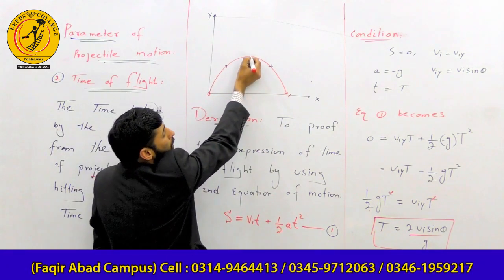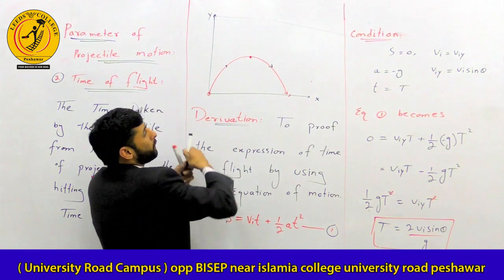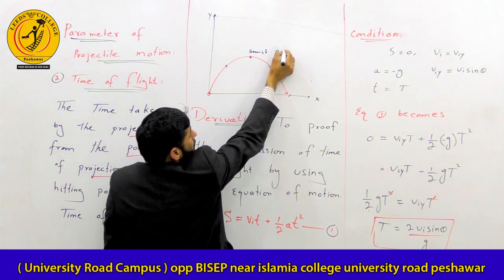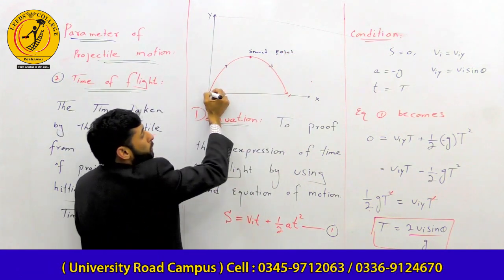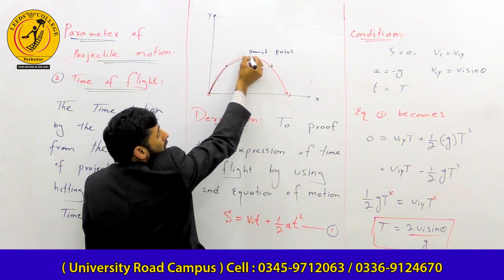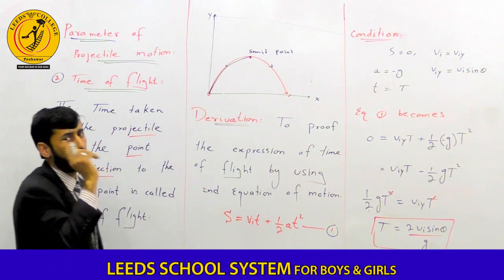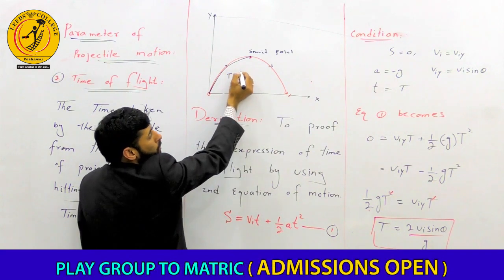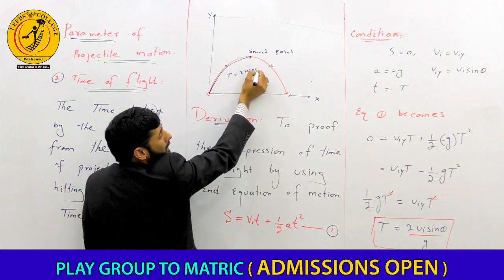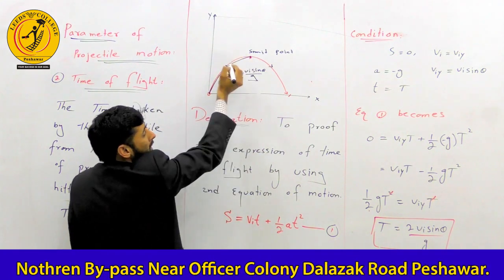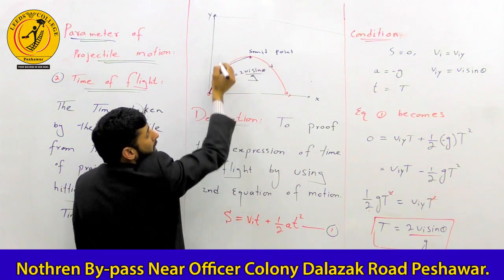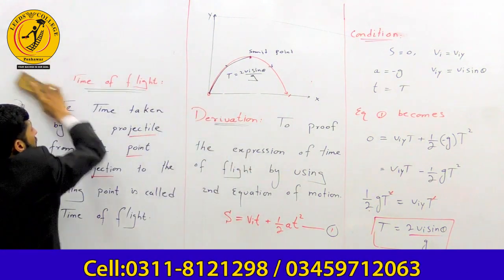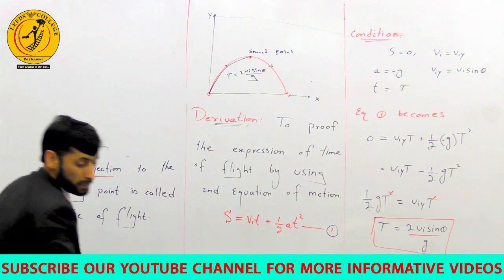The time of flight gives the total time from the point of projection to the landing point. For the summit point — the highest point of the projectile motion — the time taken is half of the total time of flight.